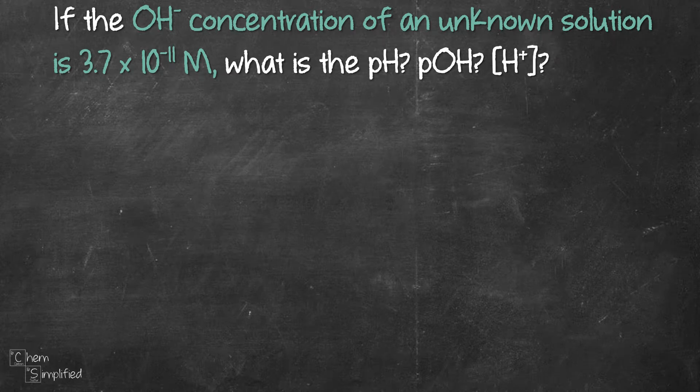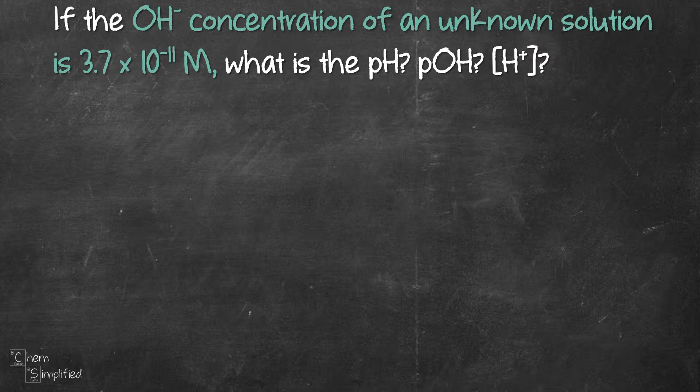The question gives the concentration of hydroxide ion as 3.7 times 10 to the negative 11 molar and wants us to find three things which are pH, pOH, and concentration of H+.